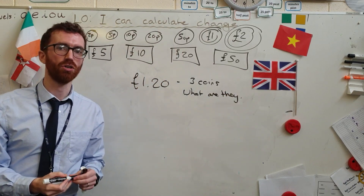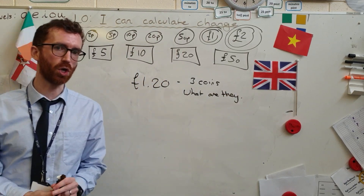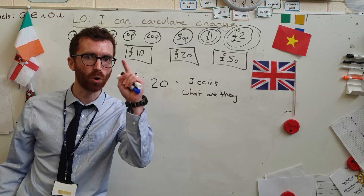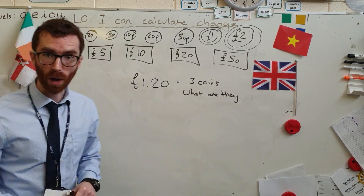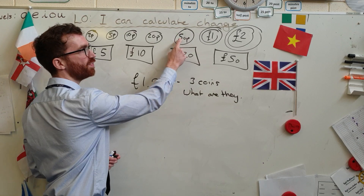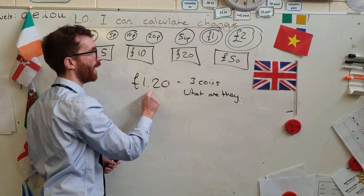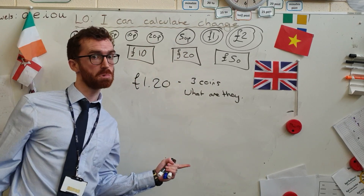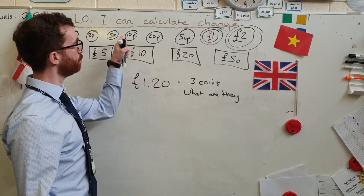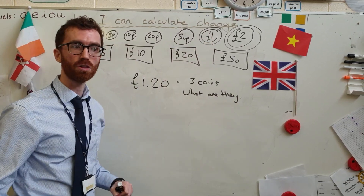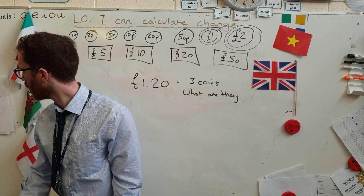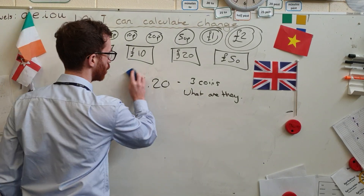Quick challenge: you've got to tell me what 3 coins make £1.20 change, and I want more than one answer. Well, the options are: they could give me two 50p's to make a pound and a 20p, or they could give me one pound and two 10p's. Those are the two options I can think of right now.